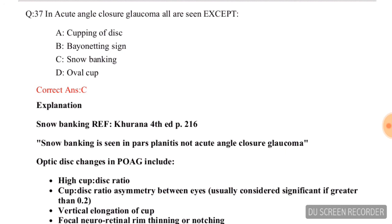Last question for today: In acute angle closure glaucoma, all are seen except — options are cupping of the disc, bayoneting sign, snow banking, and oval cup. The correct answer is option C, snow banking. That's all for now — I wish you again a very happy new year! If you liked our video, please hit the like button, share it with your friends, and subscribe to our channel. Thank you, bye bye!